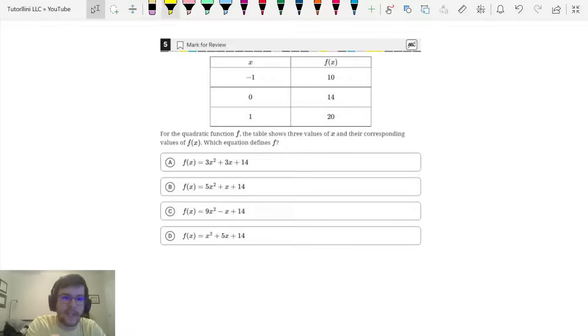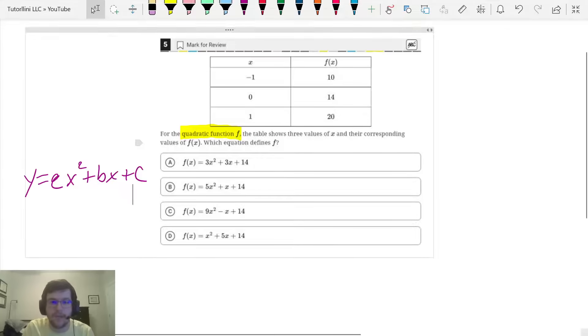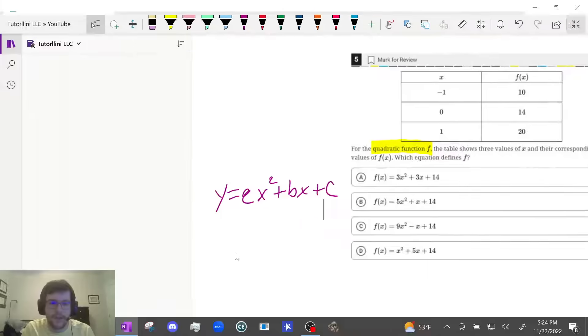For this one they tell us it's a quadratic function and there's three forms for quadratics you have to know for the test: factored form, standard form, and vertex form. You should recognize by looking at the answer choices that these are in standard form: y equals ax squared plus bx plus c. So let's do the same thing. We're going to type in the table and then we're going to use the regression to solve it.